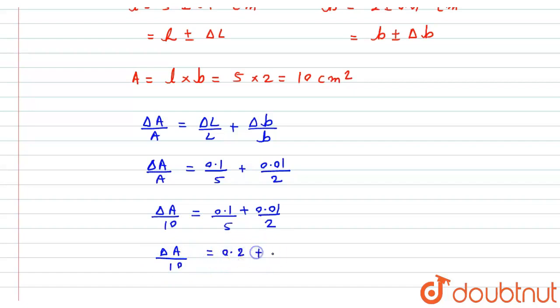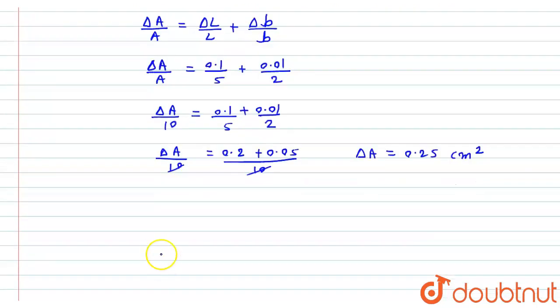So this 10, 10 will get canceled, and we get delta A will be equals to 0.25 centimeter square. So the required area for the given plate: